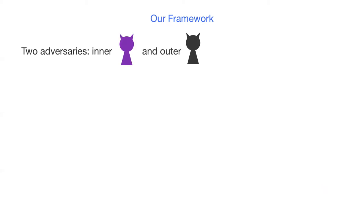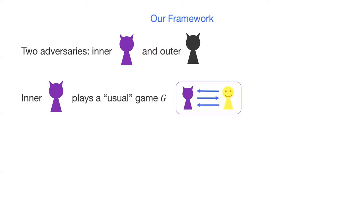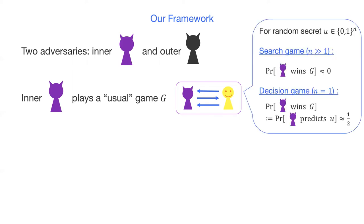Now we describe our framework. There are two adversaries: an inner adversary and an outer adversary. The inner adversary plays the security game G, which is an interaction between an adversary and a challenger. We assume that for every game, a challenger chooses a random secret U of length N. For search games, we usually require that the adversary's winning probability should be close to zero. For decision games, the secret is just a bit, and the winning condition is to predict the bit U, so the winning probability is designed to be close to one-half.